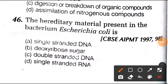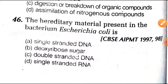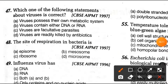Question number 46: what is the hereditary material present in the bacterium E. coli? The answer is double stranded DNA. Option C is the right answer.